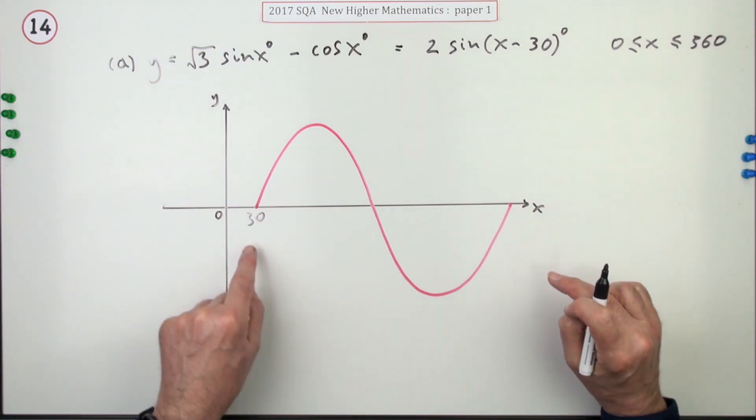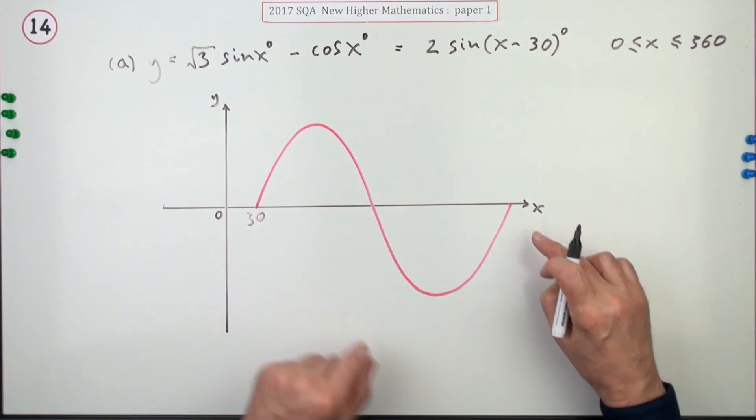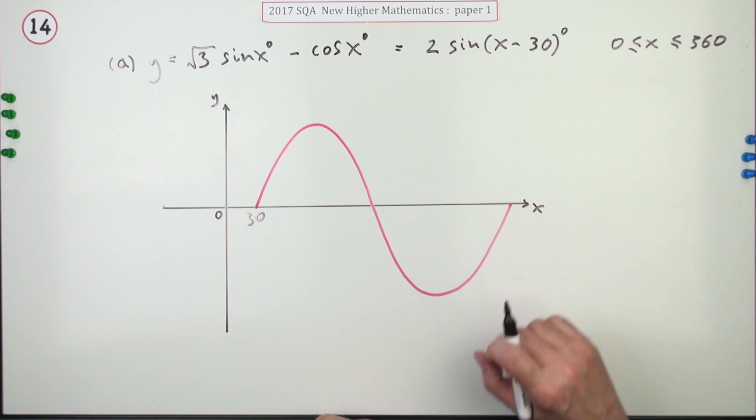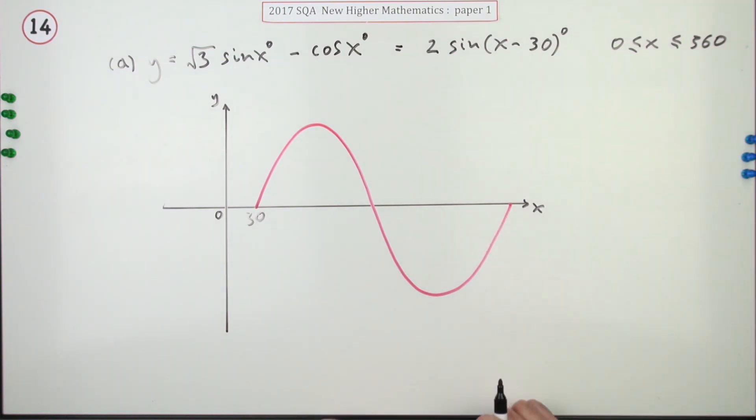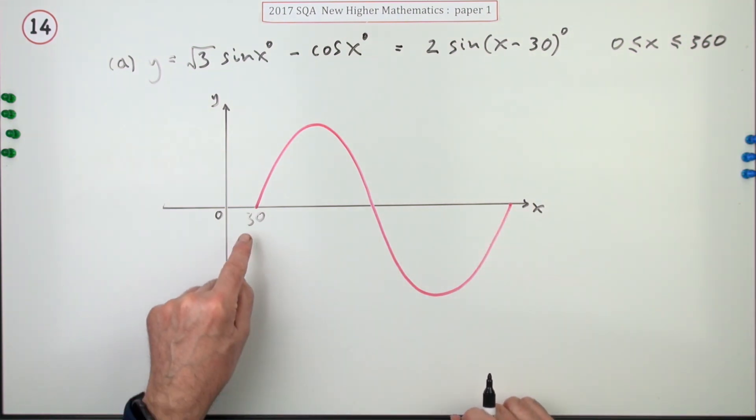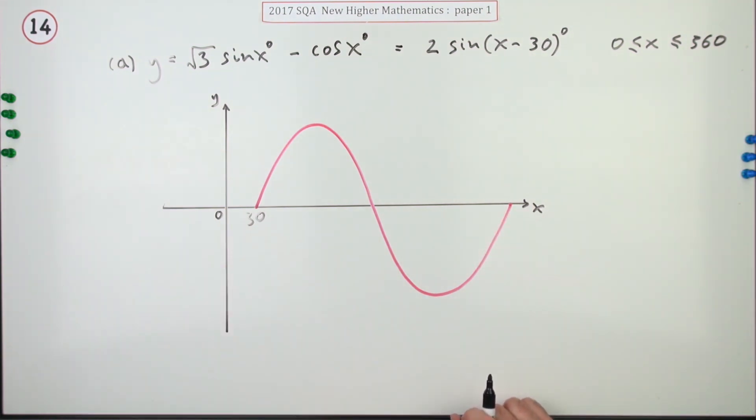If the graph is shifted forward 30, it'll start at 30 but finish at 390. Since we want the domain from 0 to 360, there's a missing portion at the left side — the graph should continue back to the y-axis.